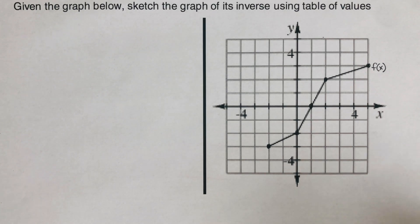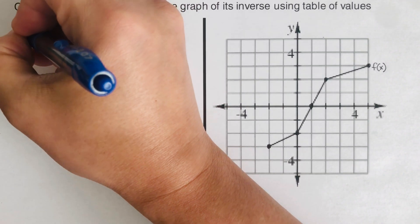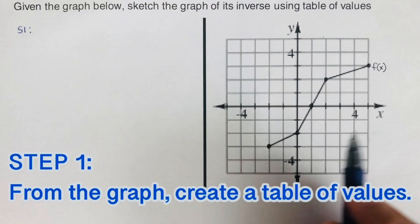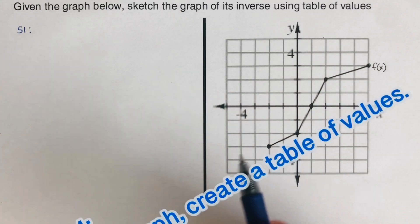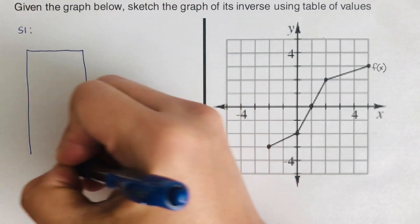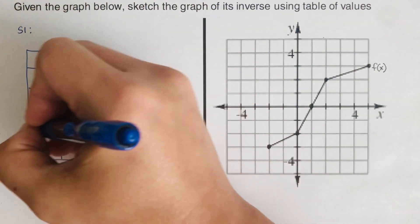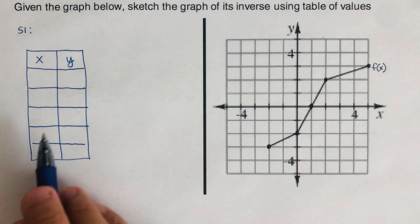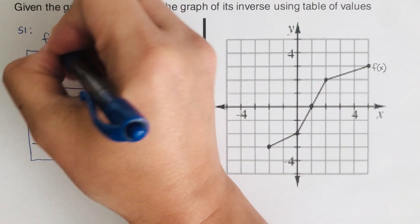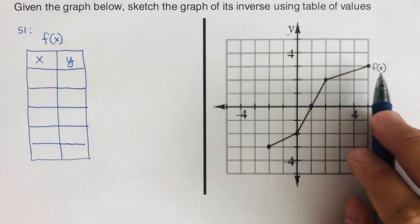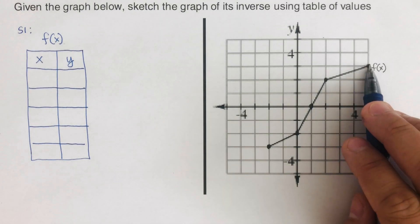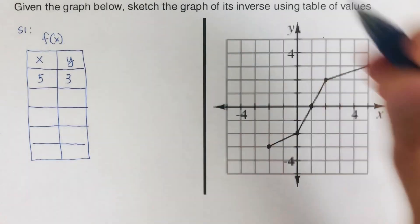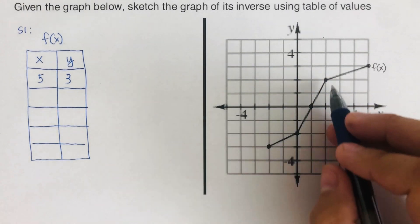For this second problem, Step 1: from the graph create a table. There are five dots here so I will create that table. This table is for f(x), which is this function right here. You can start anywhere — let's start with this point here, which is (5, 3). I write five and three, and then I determine the rest of the coordinates of each of these dots.